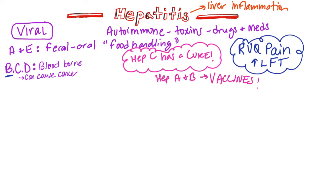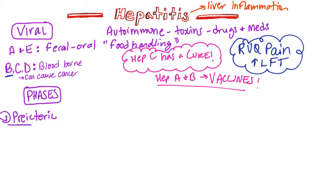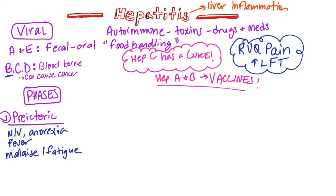Hepatitis A and B have vaccines. Hepatitis has three phases of infection. The first one is pre-icteric — remember that icteric was another word for jaundice — so this means before jaundice appears on the skin. The symptoms are nausea, vomiting, anorexia, fever, malaise, enlarged lymph nodes, a rash, urticaria, and joint pain.